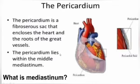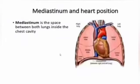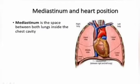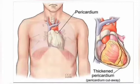The pericardium lies within the middle mediastinum. Mediastinum is the space between both lungs inside the chest cavity. As you can see here, this is the right lung and this is the left lung — in between, inside the chest cavity, we have our heart covered with the pericardium.